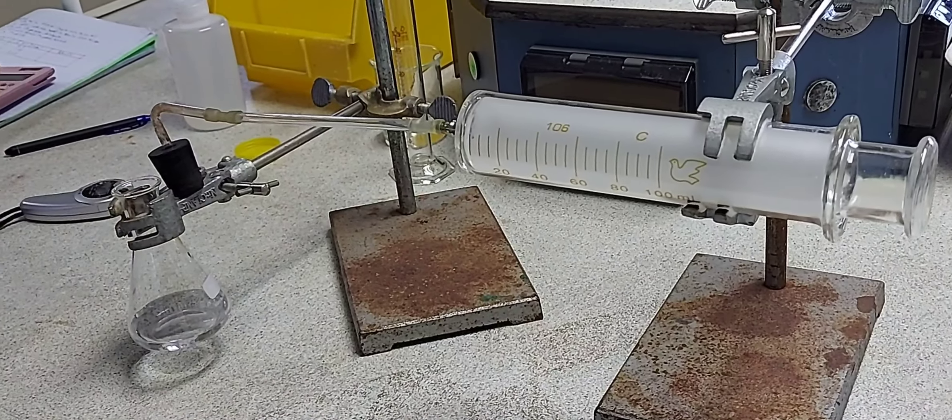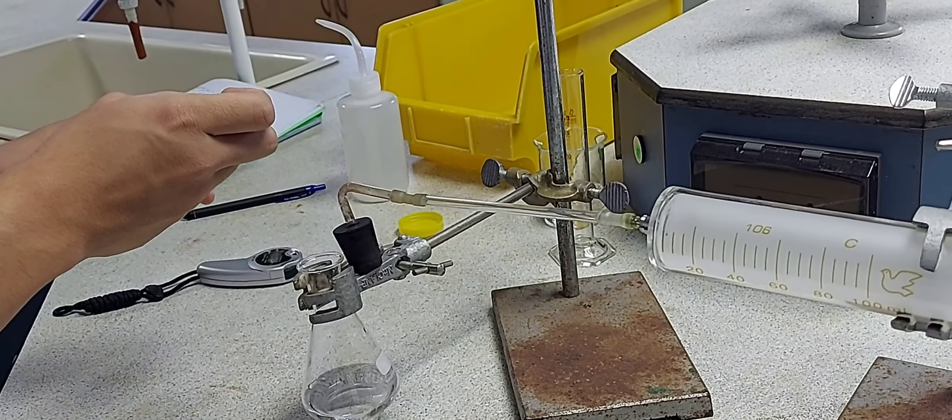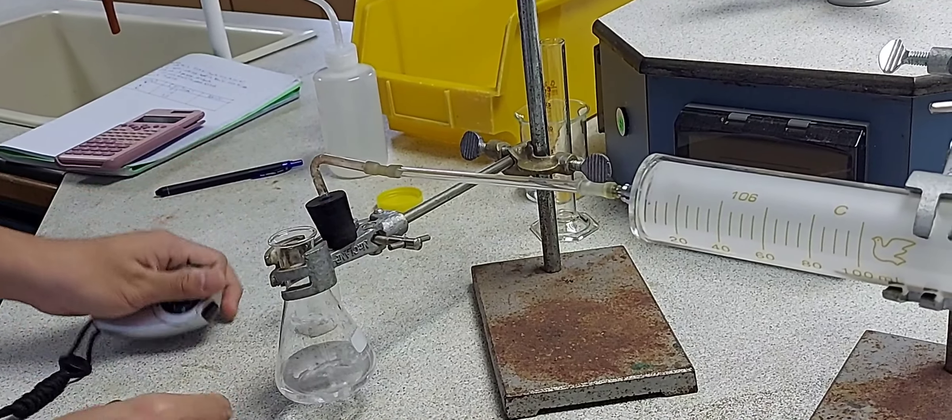Once the calcium carbonate is added, immediately bung the conical flask and start the timer.